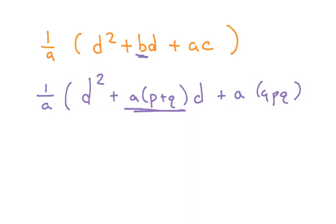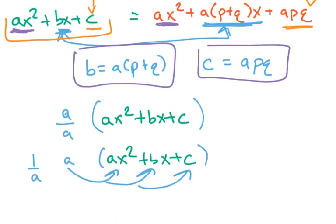And then we also said c was a, p, q. So this is b, and this is c. And let's, just to be clear, I'm just rewriting them with these two values.